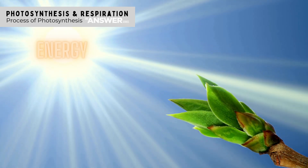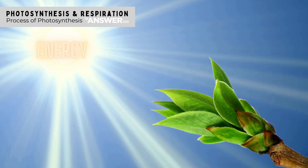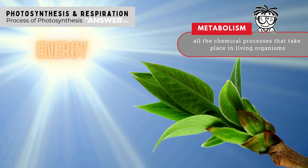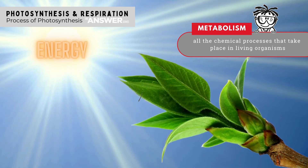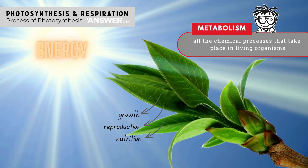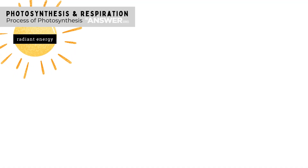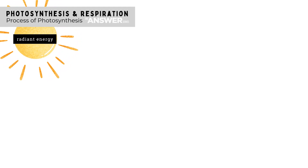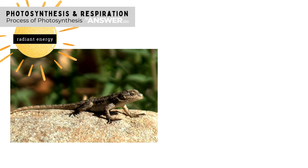All life on earth is either directly or indirectly dependent on energy from the sun. Living organisms need energy to sustain their metabolic activities and life processes like growth, reproduction, nutrition, and so on. Energy from the sun is known as radiant energy or light energy.